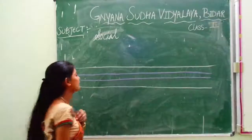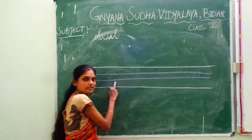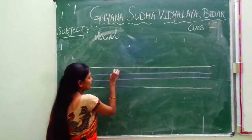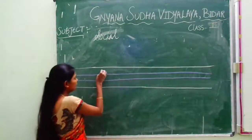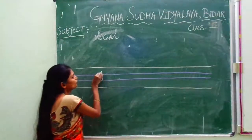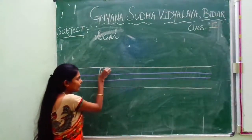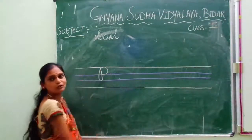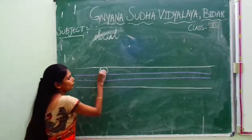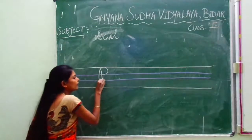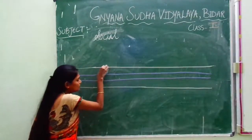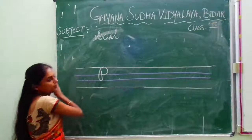Okay children, we will start with the next cursive letter — P. See, capital cursive P, how to write. See here, observe. One straight line, then one more straight line, touching pink line, one curve like this. It is called capital cursive P. Once again I am showing you, observe carefully. See here how I am writing this P. This is called P.